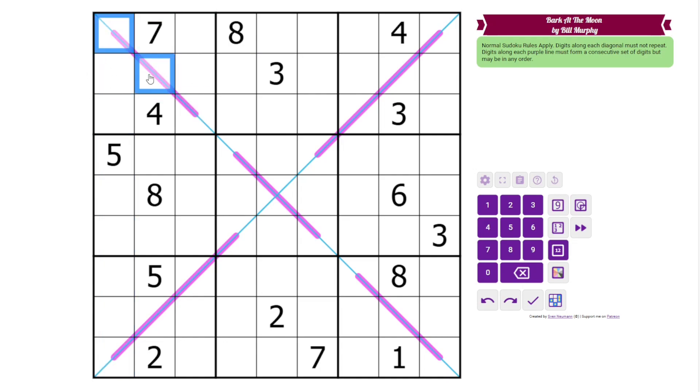Additionally, we have these diagonals marked in blue, which must also contain the digits from one to nine, because digits cannot repeat and there are nine cells. And we also have some purple lines in the grid. These are Rinban lines and they must form a consecutive set of digits, but those digits can be in any order.